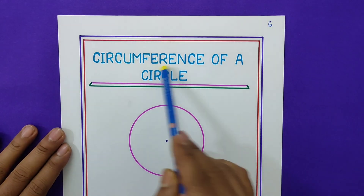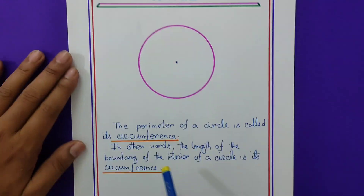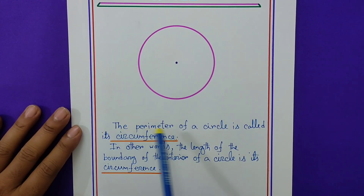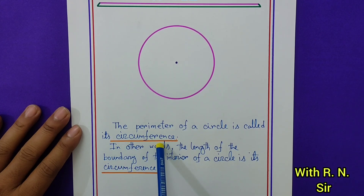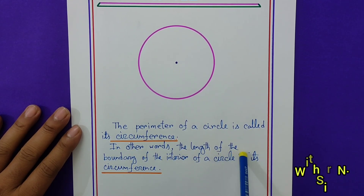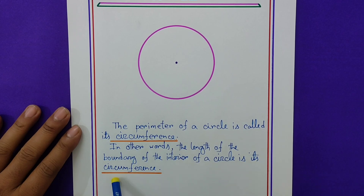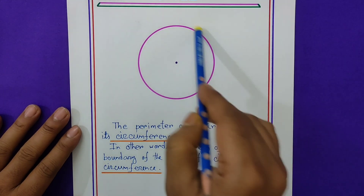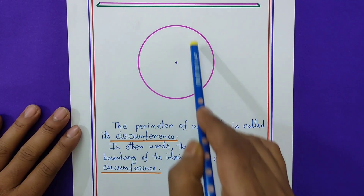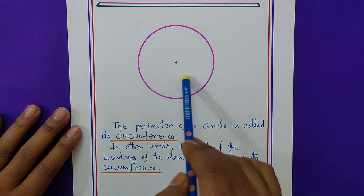Page number 6: circumference of a circle. The perimeter of a circle is called its circumference. In other words, the length of the boundary of the interior of a circle is its circumference — meaning the outer length of the circle is called the circumference.